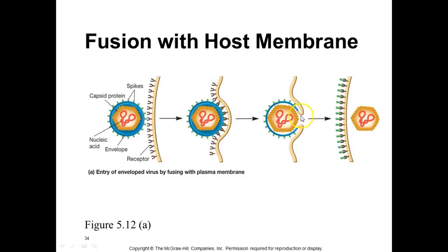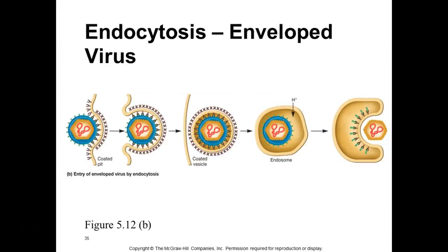Viral spike binding can cause the cell to fuse its membrane with the viral envelope, allowing the nucleocapsid — the nucleic acid with the protein coat — to gain entry into the cell. Another mechanism is endocytosis: the cell membrane surrounds the envelope of the virus and encases it in a vesicle, which then peels off the envelope and releases the nucleocapsid inside the cell.